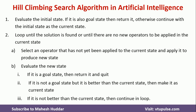First, we need to evaluate the initial state, or you can say the start state. If the initial state is the goal state, then we need to return that. Otherwise, we need to continue with the initial state as the current state. Sometimes the initial state and the goal state may be the same, so in that case we return immediately. Otherwise, we consider the initial state as the current state and continue the algorithm. In the second step, we loop until the solution is found or until there is no operator to be applied in the current state.